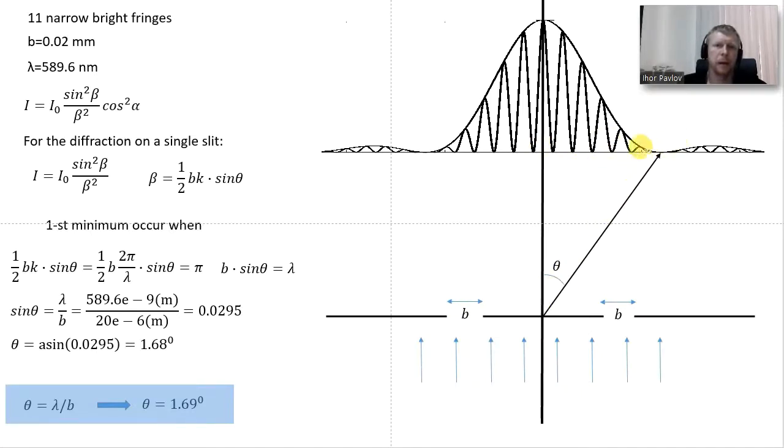You remember the equation we derived: we have substitution beta in the sinc function, beta equals one half bk sine theta, and then the first minimum occurs when beta equals pi. When beta equals 0 we have central maximum because the limit of sine beta when beta approaches 0 is equal to 1.